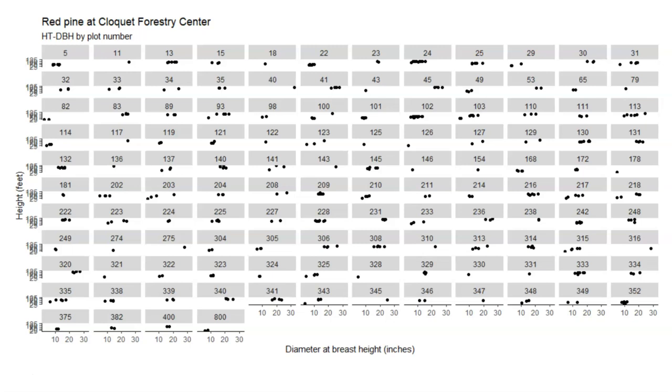Now what we're seeing is the heights of all of the trees in those different plots. There are lots of different plots, and there are not a ton of trees in every plot. Most plots have one, maybe two trees, a few have maybe as much as 10.